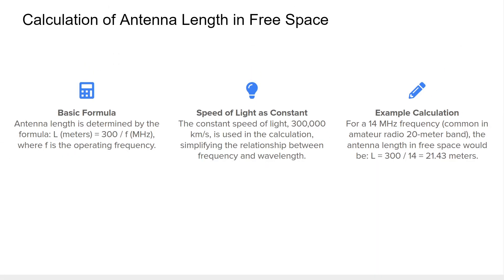We start off by calculating the length of an antenna in free space. We use the simple formula: length, or L, equals 300 divided by F (frequency), where L is the antenna length in meters and F is the frequency in megahertz. This calculation is derived using the speed of light, which travels at 300,000 kilometers per second. As an example, for a 14 MHz signal (20-meter band), the calculated antenna length would be approximately 21.43 meters. This formula serves as the foundation for further adjustments in real-world conditions.